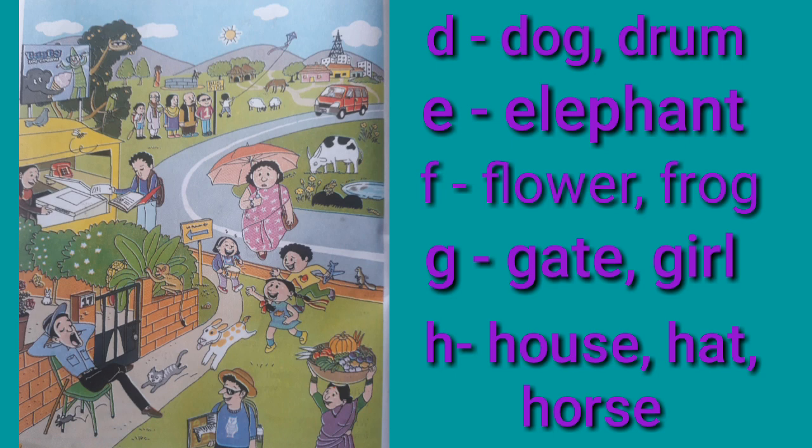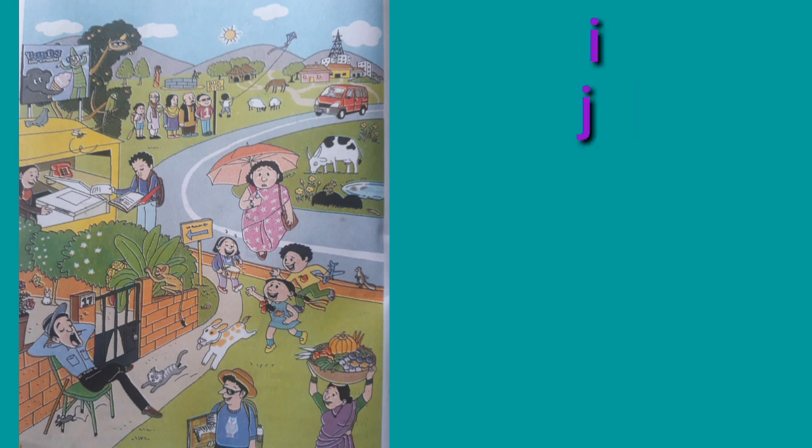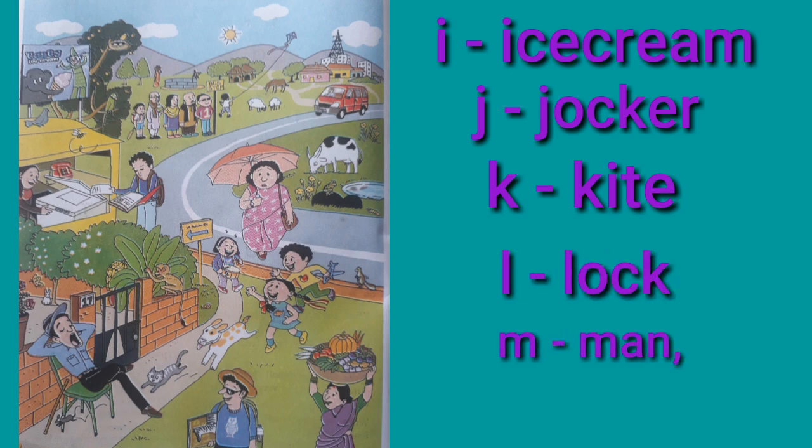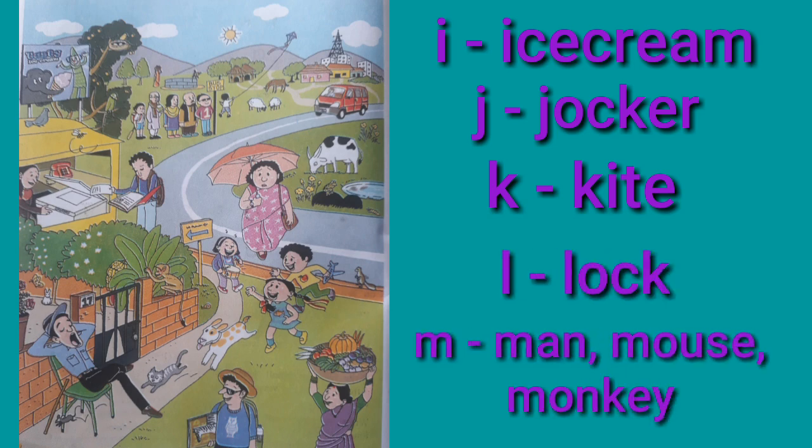From G: Gate, Girl. From H: House, Hat, Horse. From I: Ice Cream. From J: Joker. From K: Kite.